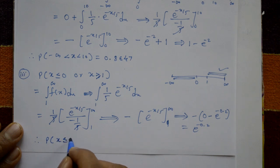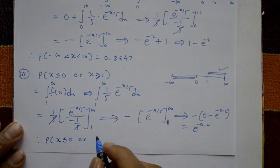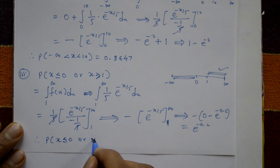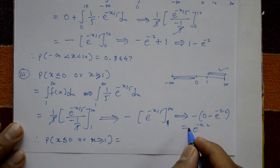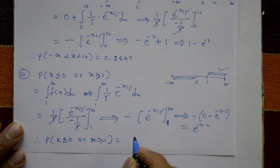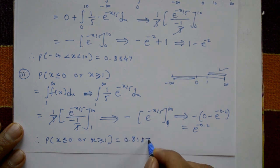This simplifies to plus e raised to minus 0.2. Therefore probability of x less than or equal to 0 or x greater than or equal to 1 equals e raised to minus 0.2, which is 0.8187. This is the required solution.